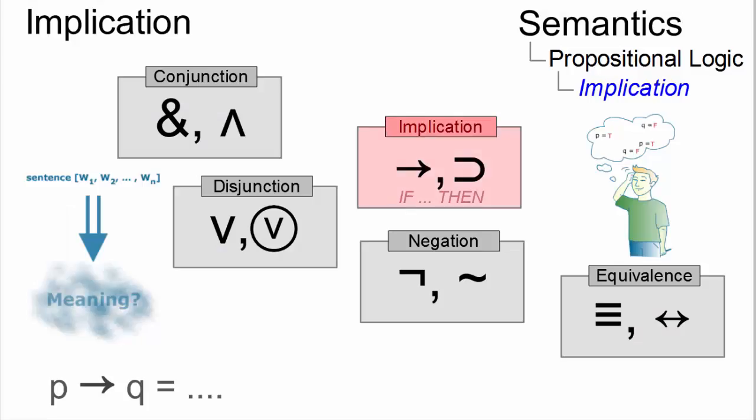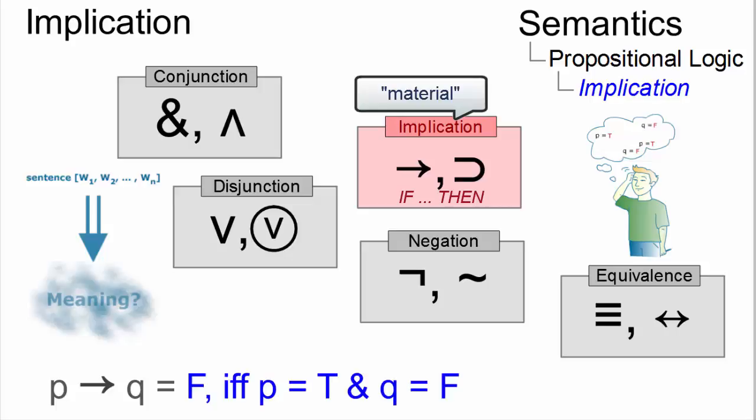The implication if-then is less similar to its corresponding expression in natural language than any other logical connective. In propositional logic, it is usually called the material implication, and it is only false if its antecedent P, the if-clause,